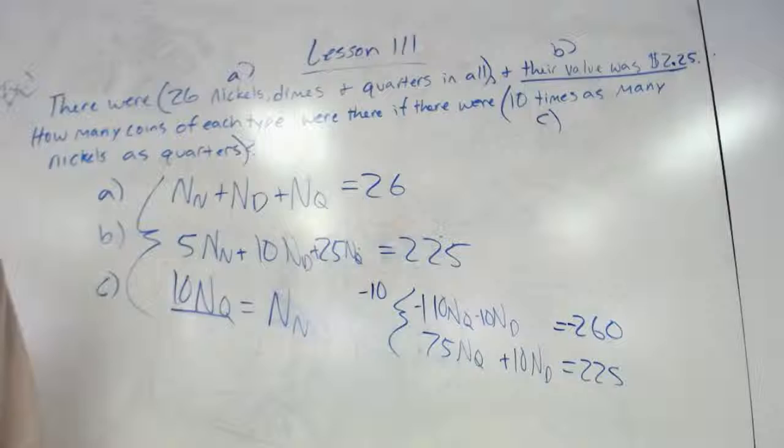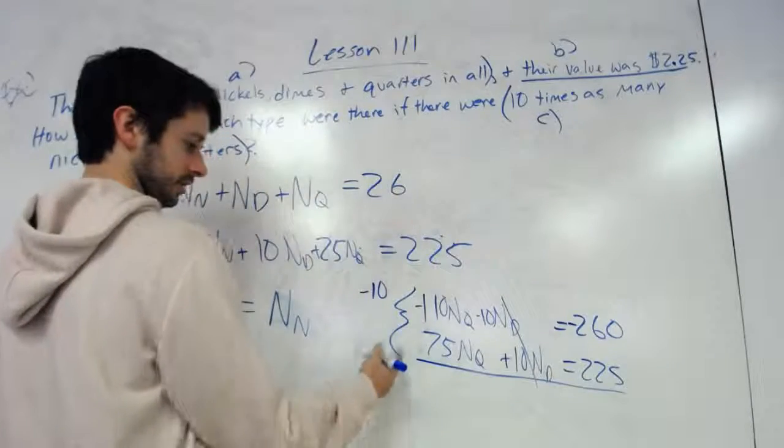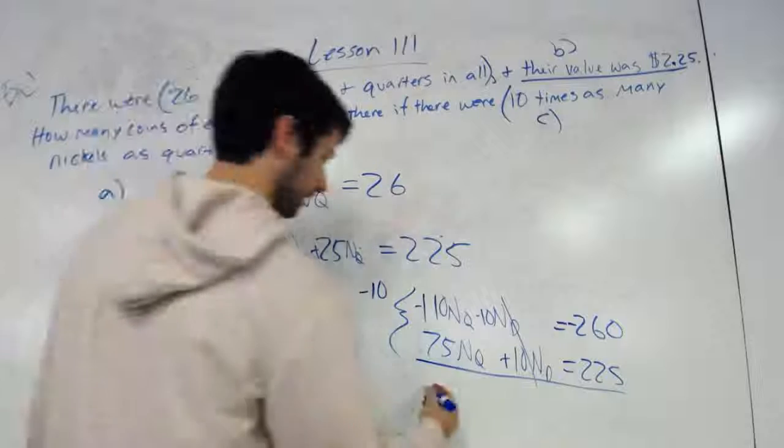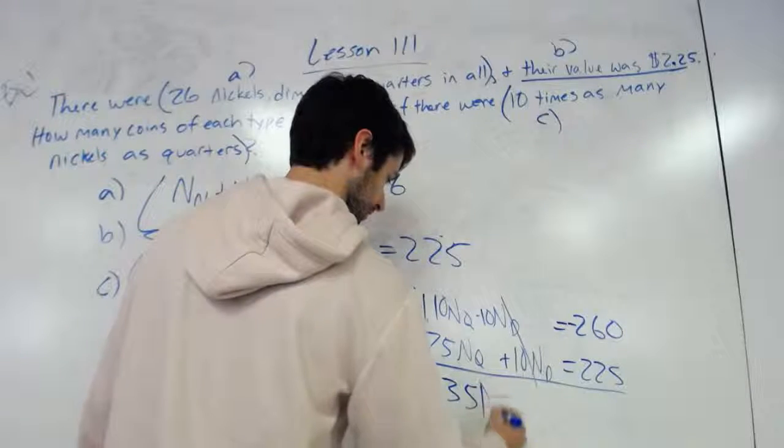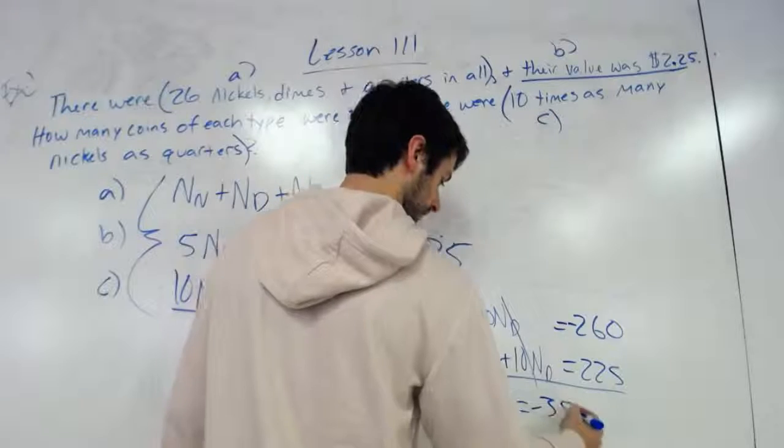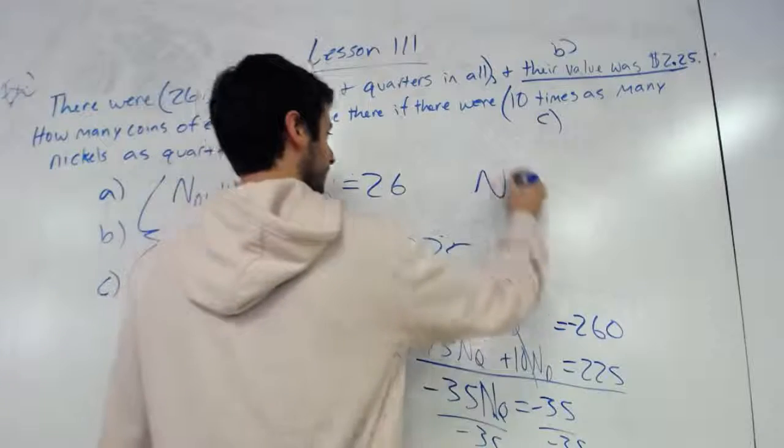So when I solve those would cross out. 110, 75, that would be negative 35 equals negative 35.